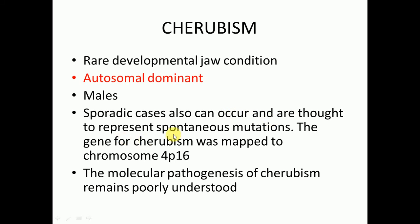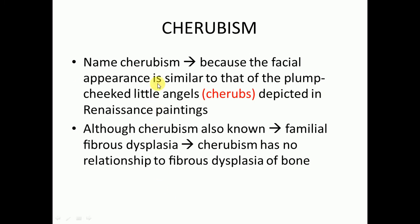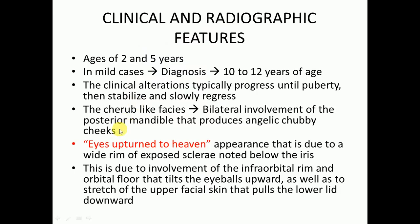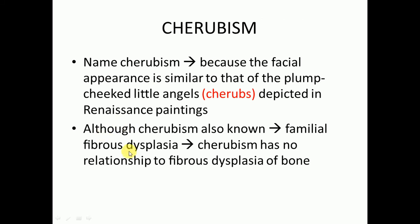Sporadic cases are thought to represent spontaneous mutations. The gene for cherubism was mapped to chromosome 4p16, but the molecular pathogenesis remains poorly understood. We call it cherubism because the facial appearance is similar to that of the plump-cheeked little angels depicted in Renaissance paintings. Although cherubism is also known as familial fibrous dysplasia, it has no relationship to fibrous dysplasia of bone.